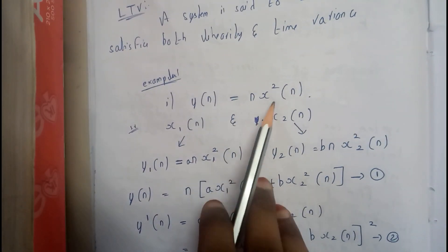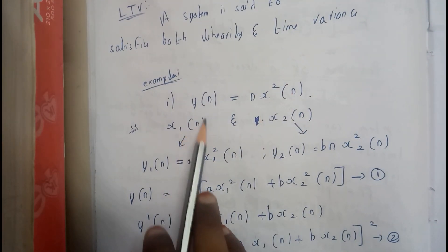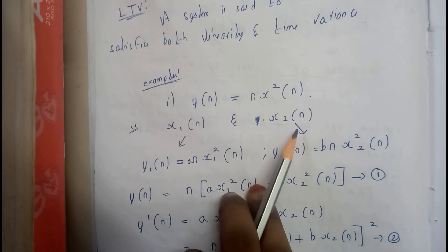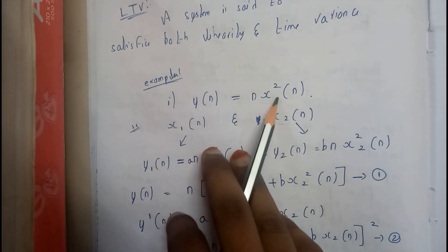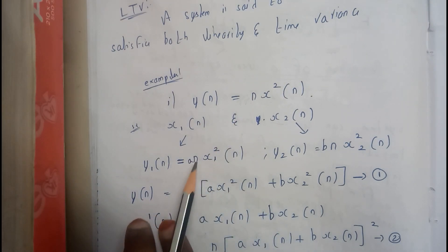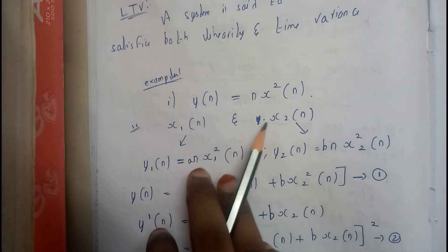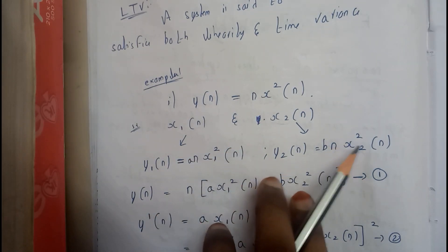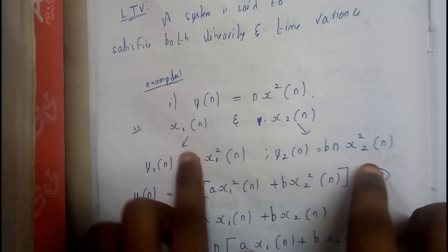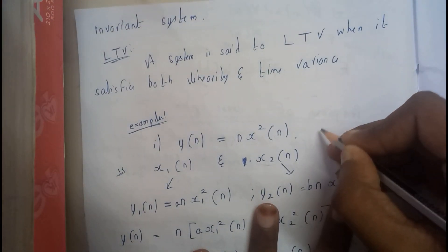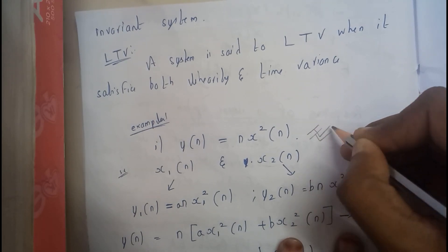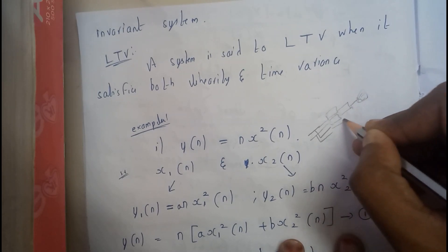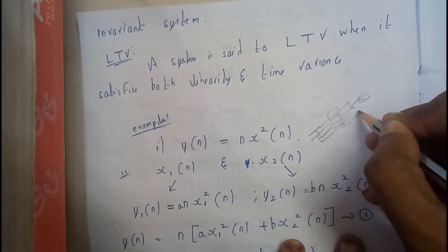Let us take the first example: Y(n) = n · X²(n). When we assume two signals for linearity, the first signal is X1(n) and the second is X2(n). When we pass X1(n) through the system and multiply with A, we get A·n·X1²(n). Similarly with B and X2, Y2(n) = B·n·X2²(n). Now we will be adding them. First, both signals are passed through the system and then added.